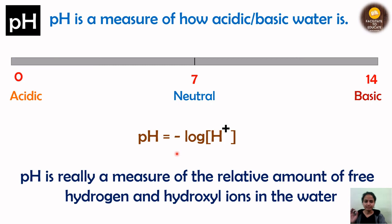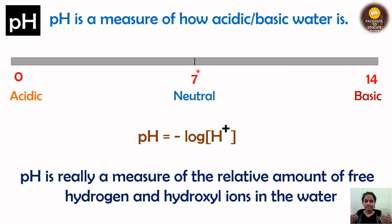pH is the inverse log of H+ ions. Each number on the scale represents a 10-fold change in the acidity or basicity of water — moving from 7 to 6 means acidity increases 10 times, and from 6 to 5 another 10 times. pH is really a measure of the relative amount of hydrogen and hydroxyl ions in water: more H+ ions means more acidity, more OH- ions means more basicity.